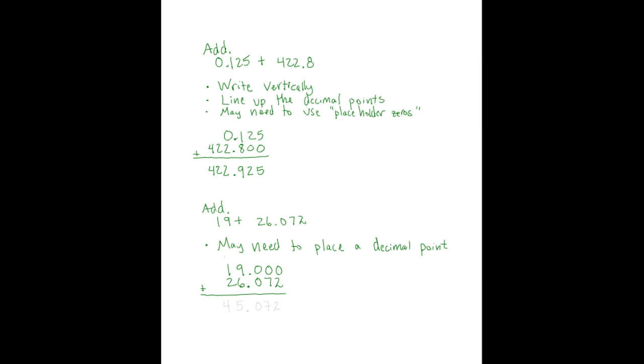Now we can draw our line and add. 0 plus 2 is 2. 0 plus 7 is 7. 0 plus 0 is 0. Place our decimal point.